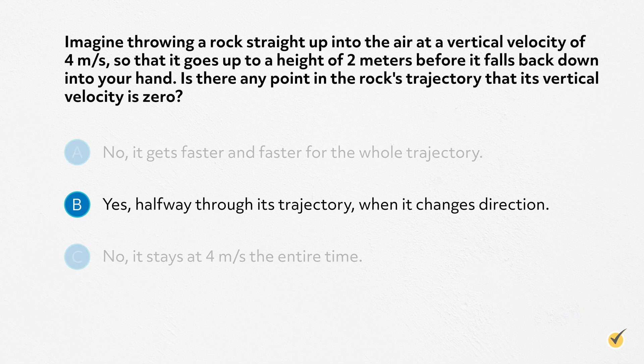The correct answer is B. The rock's velocity decreases from 4 meters per second to 0 meters per second when it reaches the height of 2 meters. Then it increases in speed again on the way down, but in the opposite direction.